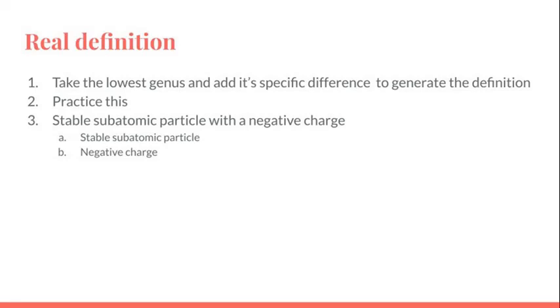And I asked her a couple questions, and we generated a definition of electron, which was essentially a subatomic particle with a negative spin. And then we checked afterward, and that was the definition generally given to it. And I used the principles of lowest genus and specific difference to figure that out.